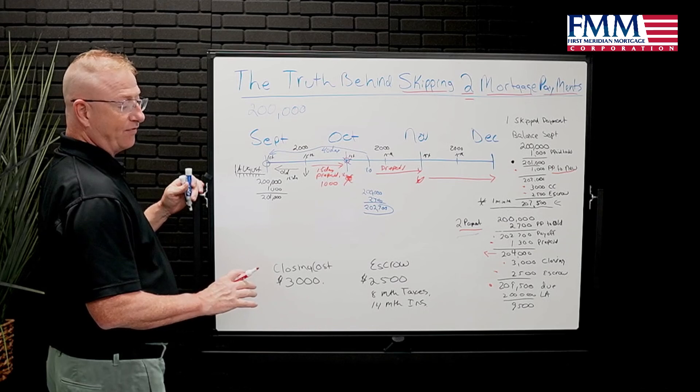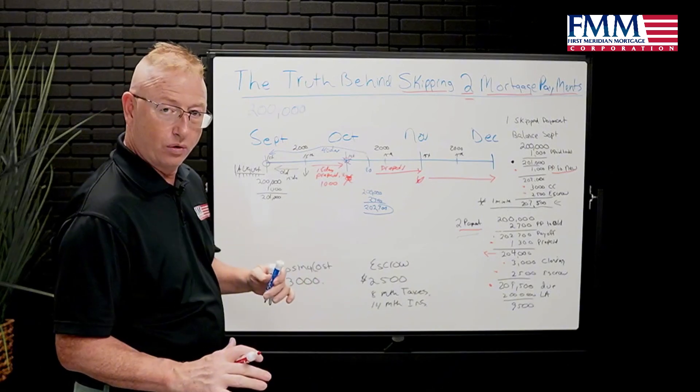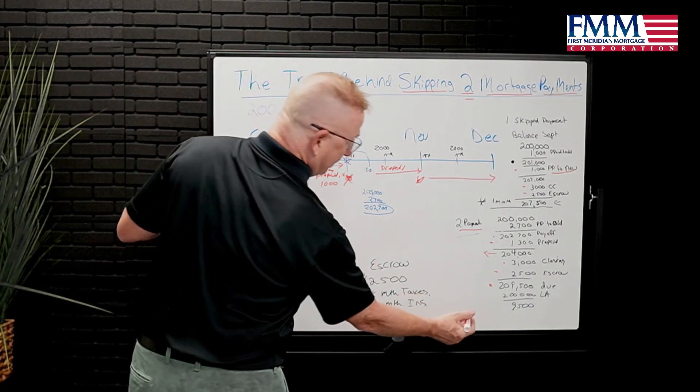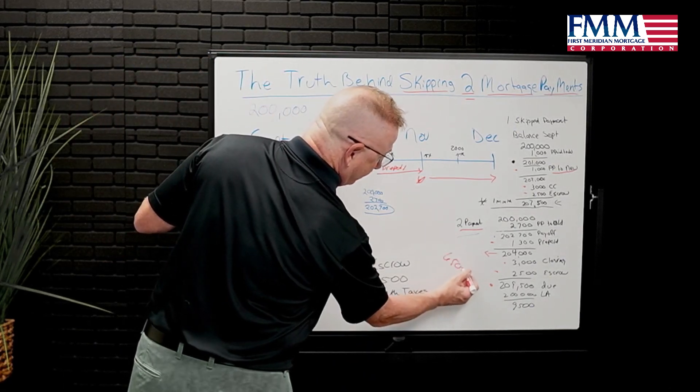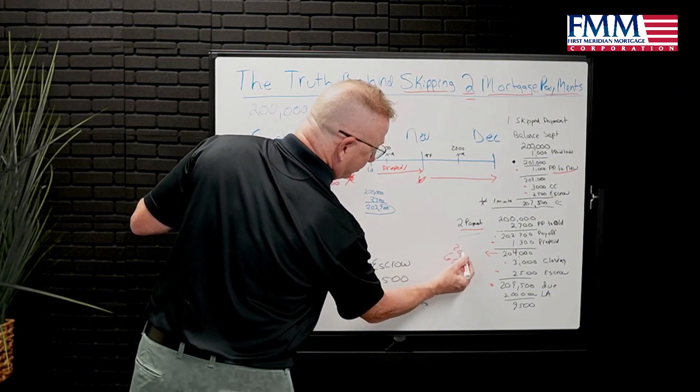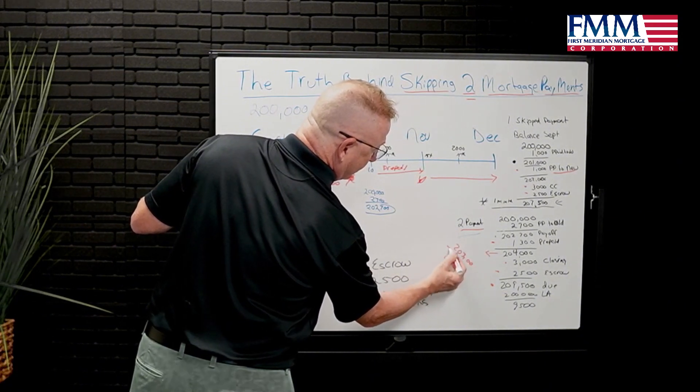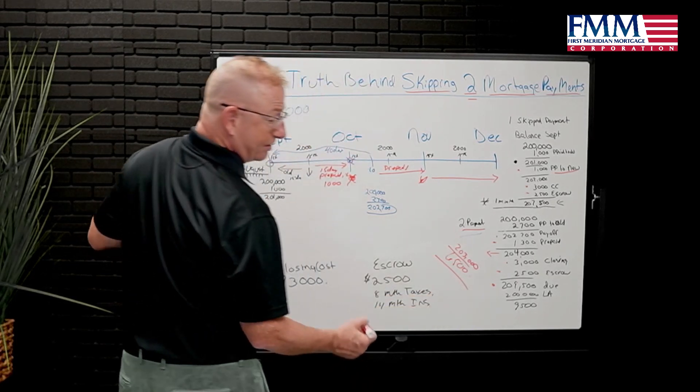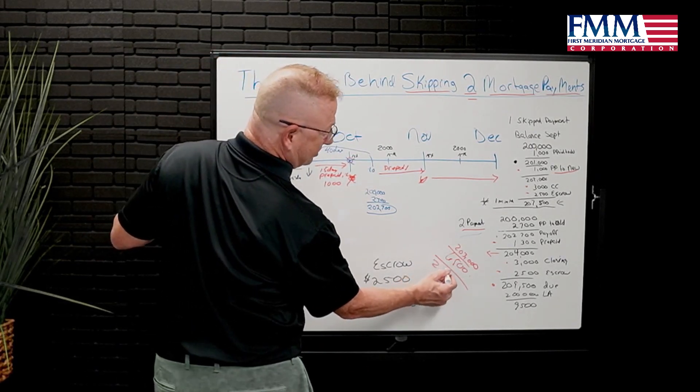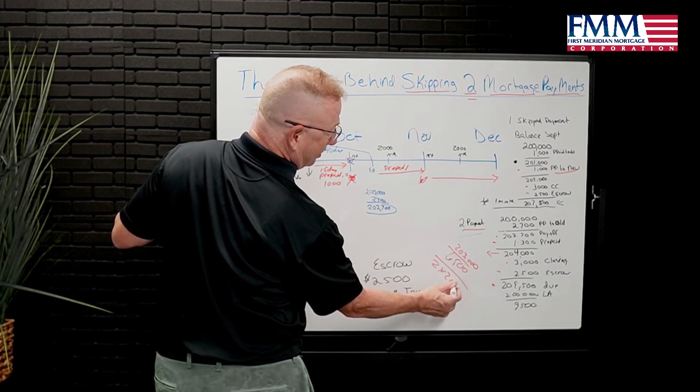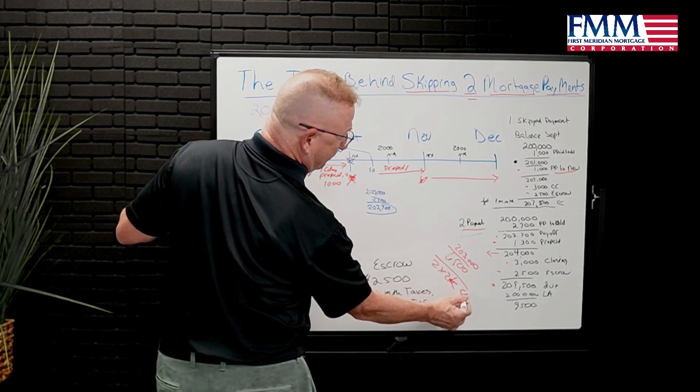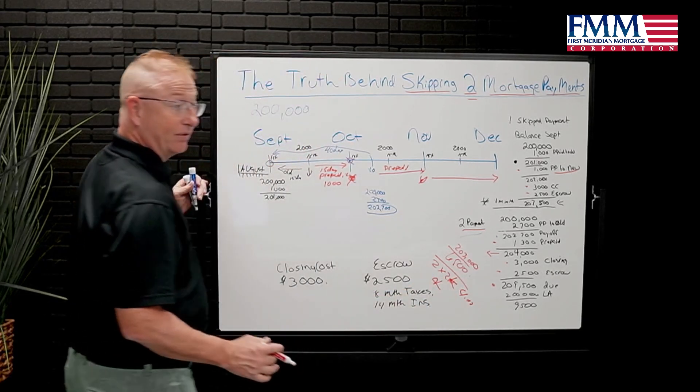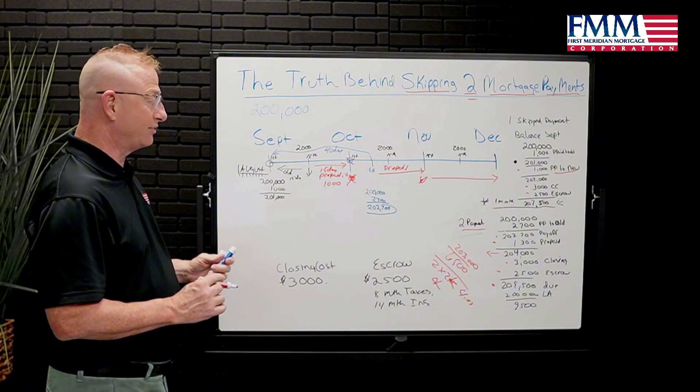Either way, if you wanted to be cash flow neutral, you would do $203,000 and bring $6,500 to the table. You skip two payments. That's times 2K. That's 4K. Get your escrow back. And you're back to zero.